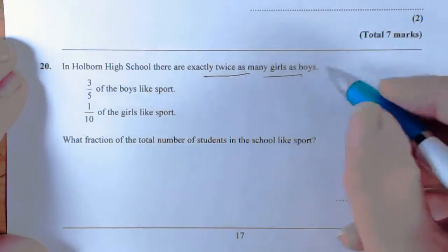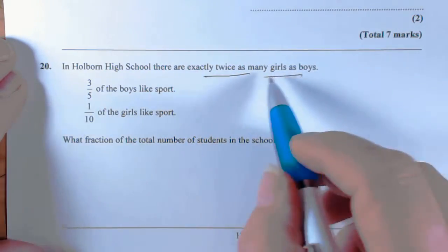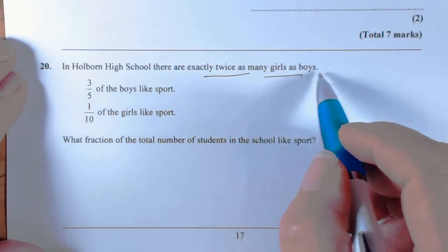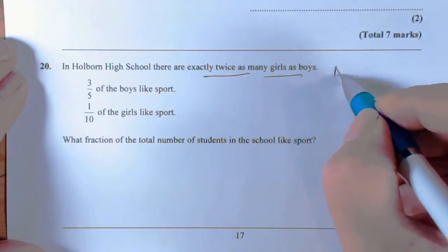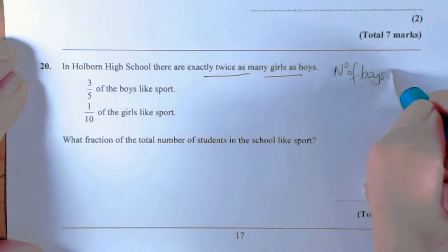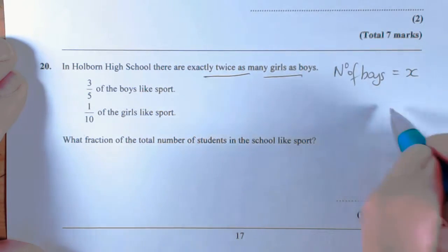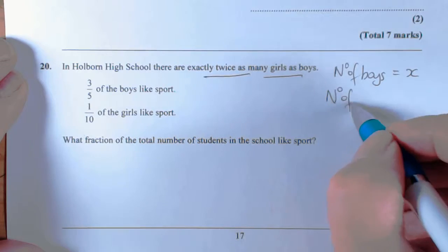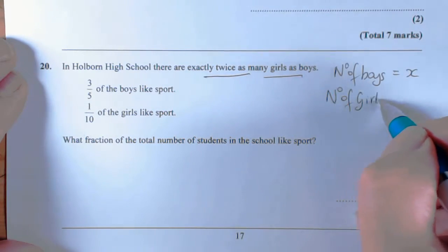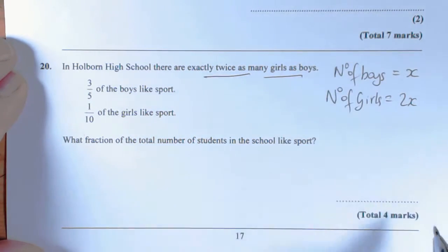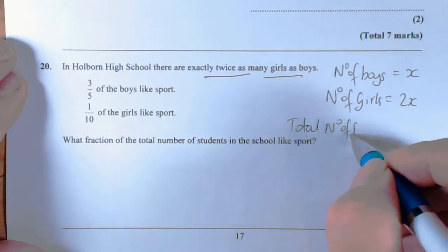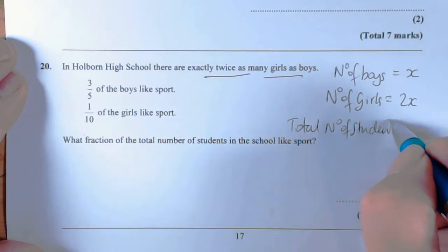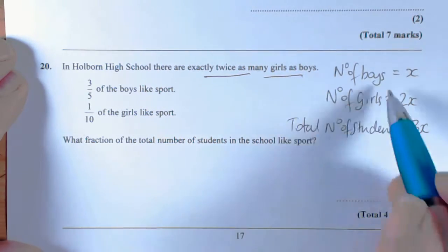So why don't we just call the number of boys X, because that's the smallest part. We're going to say the number of boys equals X. So therefore, the number of girls equals 2X. So the total number of students in the school, the total number of students, is 3X. So we've got some idea in terms of X what this school looks like.